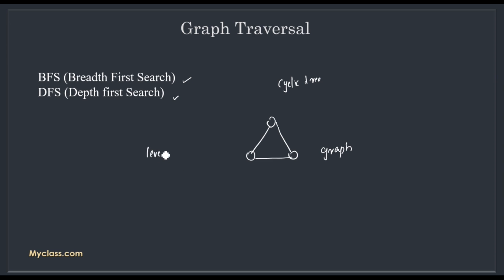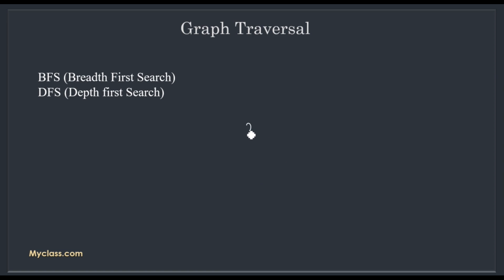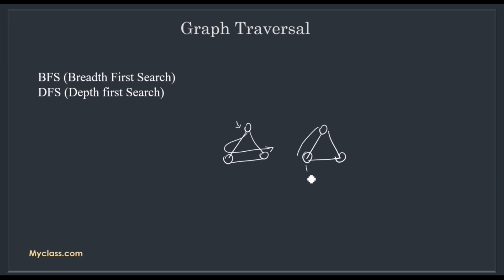In a tree, there is also breadth first traversal and depth first traversal. In breadth first, we go through level traversal — first level, then second level, then another level. BFS on graphs works the same way. In depth first traversal, we consider one node, go down one path, then backtrack and go another way — that is DFS traversal of a graph.